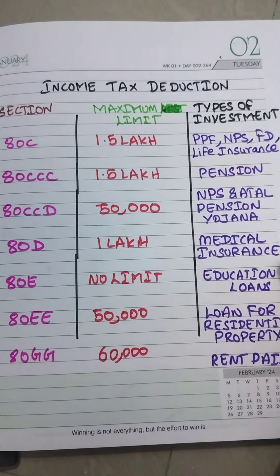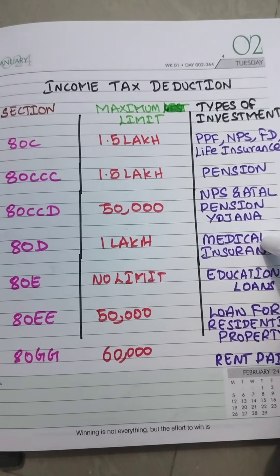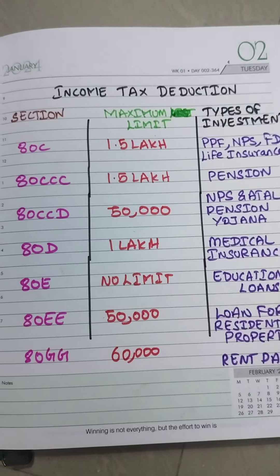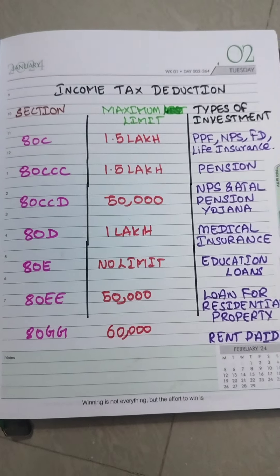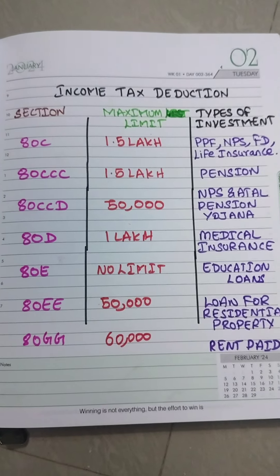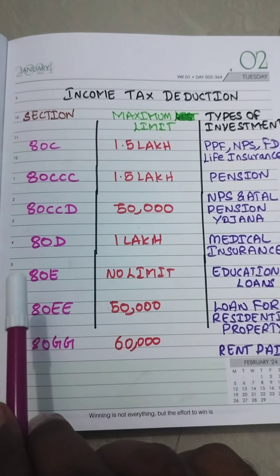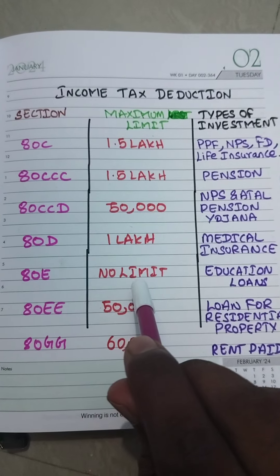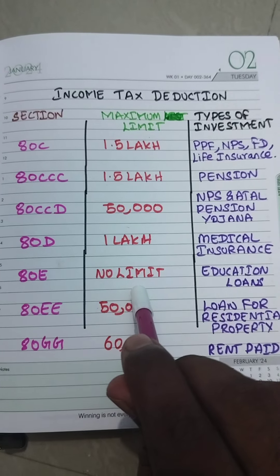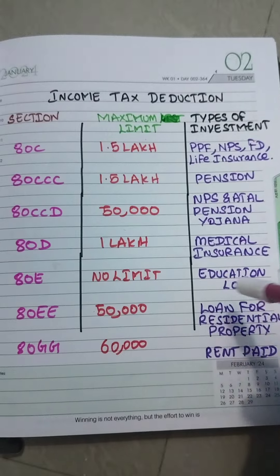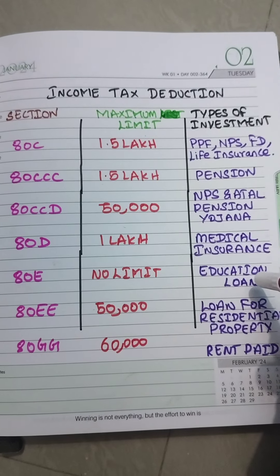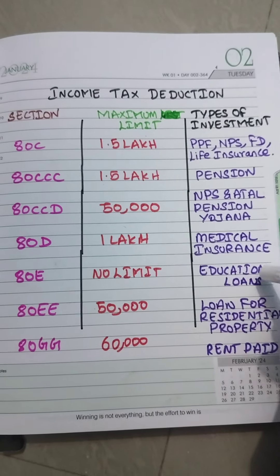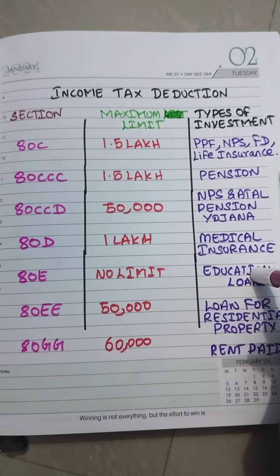Under Section 80D, you can submit all the medical insurance documents if you have paid any premium for medical insurance. Section 80E does not have any limit — in case you are paying any education loan, you can submit those documents as part of your income tax return filing.